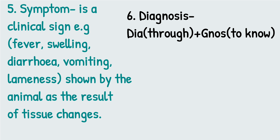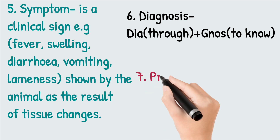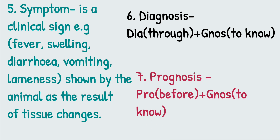Number seven is prognosis. Prognosis means knowing beforehand the chances of recovery of an animal from a disease — to know in advance whether the animal is going to recover from the disease or not.